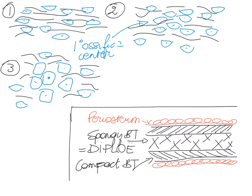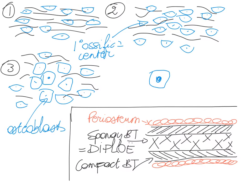Some of these mesenchyme cells are indeed differentiating into osteoblasts. Now you all know what the role of an osteoblast is. Their role is to secrete osteoid. They will start secreting osteoid around them, onto those fibers that are still present around them. This material they secrete, called osteoid, is basically bone matrix that is not mineralized.